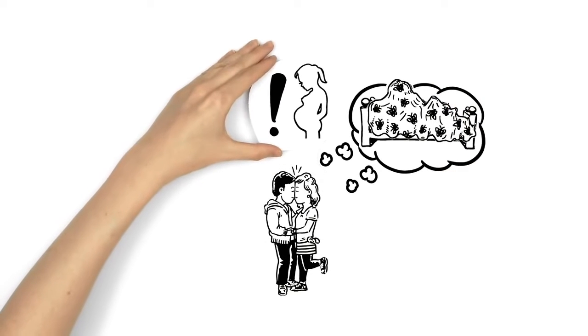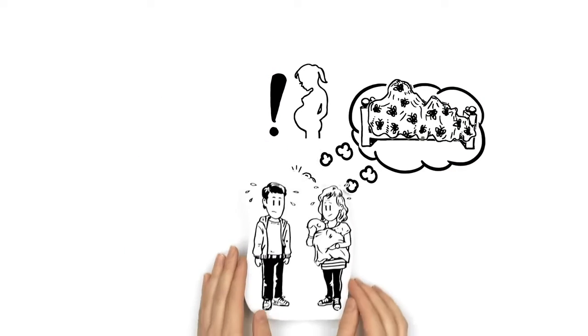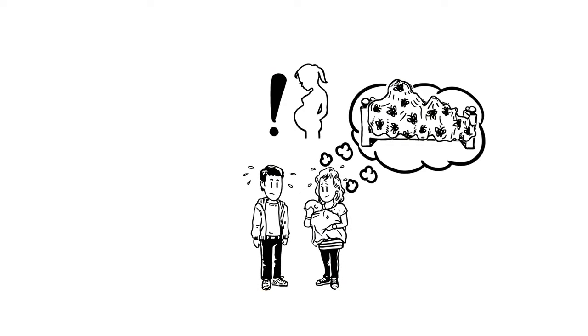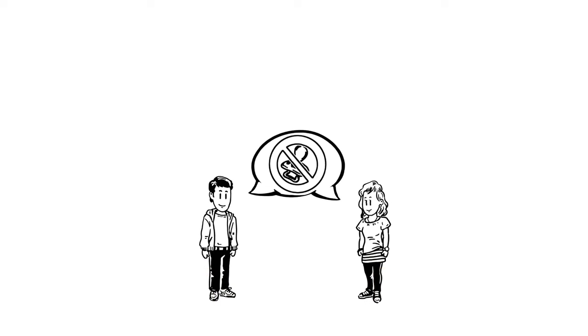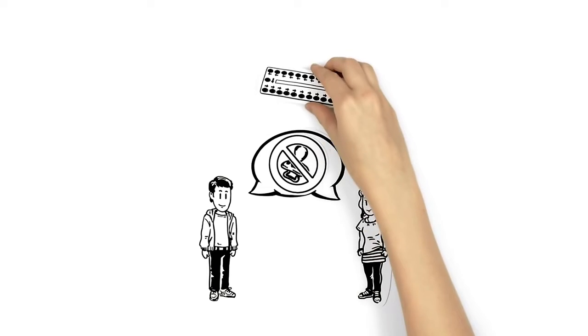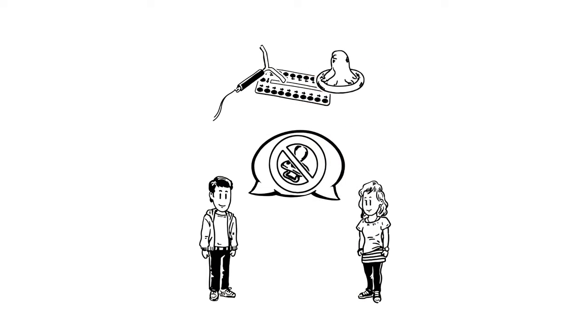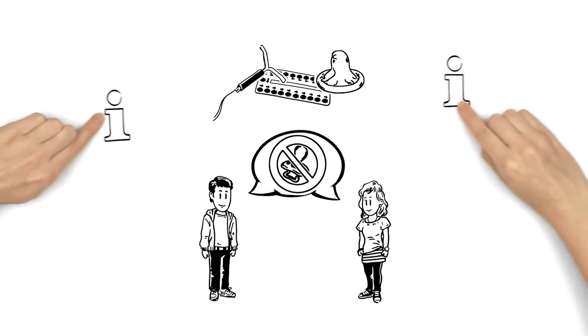Of course they know about the risk of pregnancy, but they consider themselves way too young to have a child. Because of that, talking about contraception before their first time is important. They already know of the contraceptive pill, the coil and condoms. But this information is too basic.